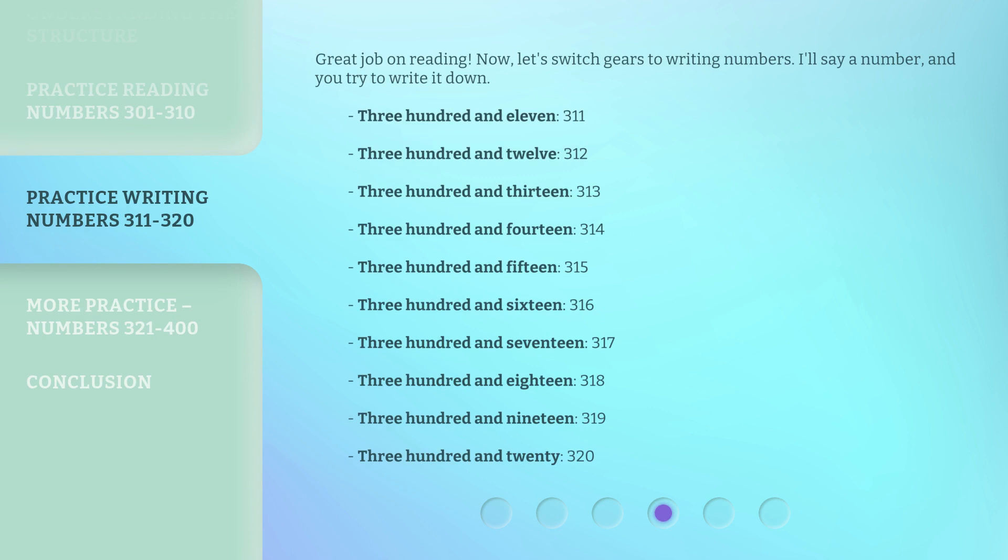Great job on reading. Now, let's switch gears to writing numbers. I'll say a number, and you try to write it down. 311, three hundred and eleven. 312, three hundred and twelve. 313, three hundred and thirteen. 314, three hundred and fourteen. 315, three hundred and fifteen. 316, three hundred and sixteen. 317, three hundred and seventeen. 318, three hundred and eighteen. 319, three hundred and nineteen. 320, three hundred and twenty.